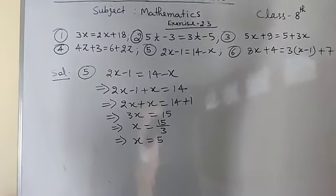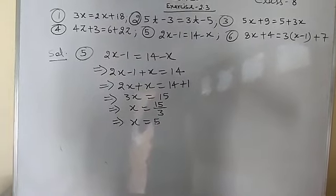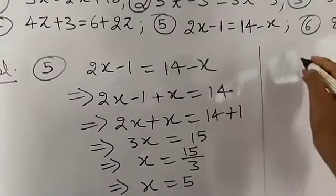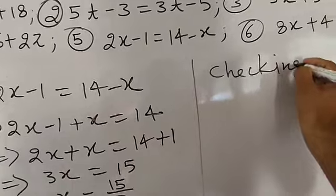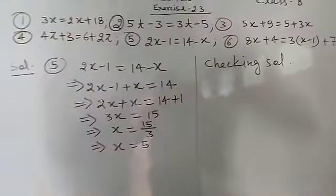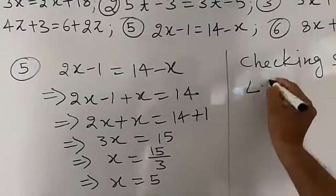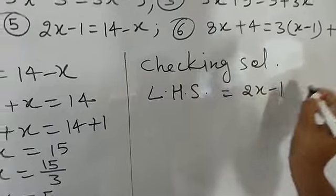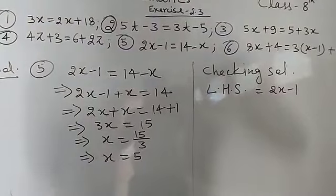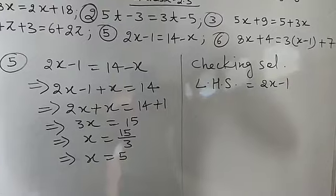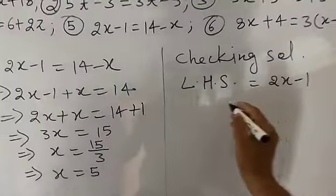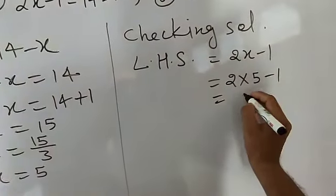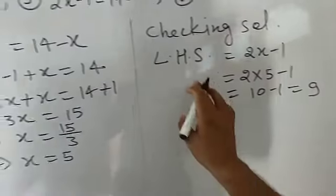In this question it is also given that after solving, you need to check your solution. So I am going to check it here. LHS is 2x minus 1. Putting x equal to 5: 2 into 5 minus 1, that is 10 minus 1, equal to 9. So the left hand side is 9.